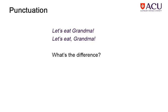Punctuation can be a neglected area of writing, but it can be so important to the meaning of a sentence. If the punctuation is changed, the meaning changes. The punctuation that could be tested includes the use of commas and apostrophes, and the punctuation of speech. The test could ask you to identify any errors in a sentence or passage, or for you to give the correct or appropriate form.